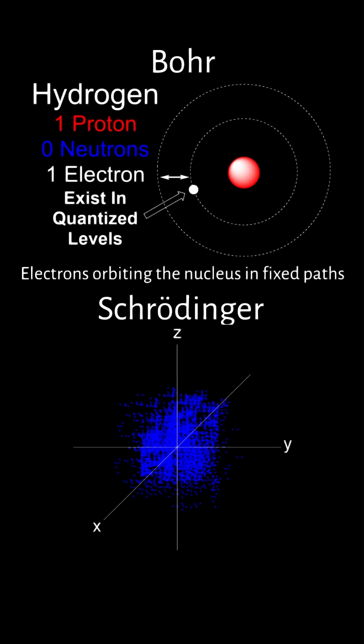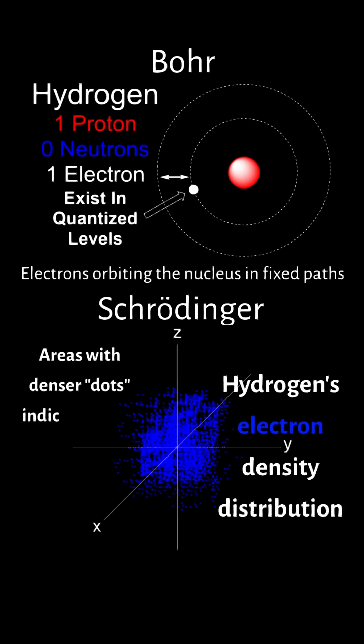These orbitals represent probabilities rather than definite paths, introducing the concept of electron density distribution. In this model, areas with denser dots indicate higher probabilities of locating an electron, shifting from predicting exact locations to calculating likelihoods.